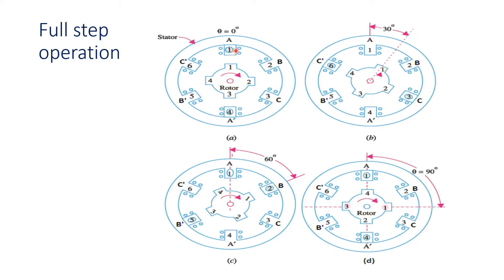In full step operation, when we excite coil A A-dash, the teeth of the rotor 1 and 3 are aligned with the stator teeth 1 and 4. When we excite B B-dash it turns 30 degrees from its initial position, and the rotor teeth 2 and 4 align with stator teeth 3 and 6. If we excite coil C, it moves to the next position, with rotor teeth 1 and 3 aligned with stator teeth 2 and 5.